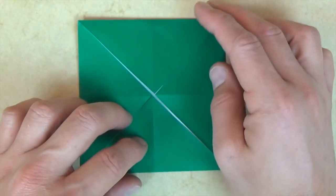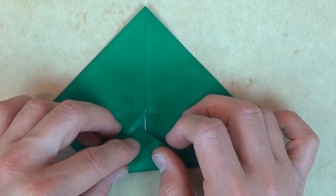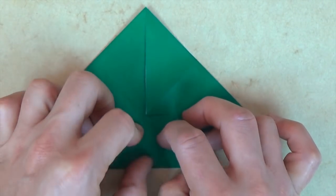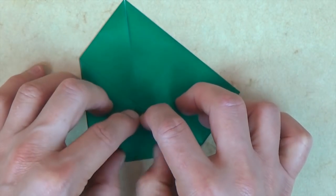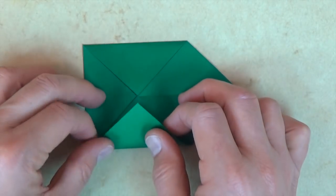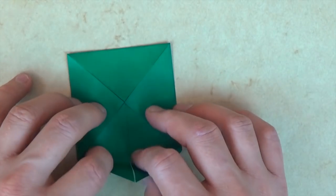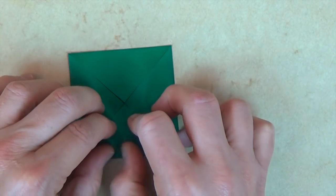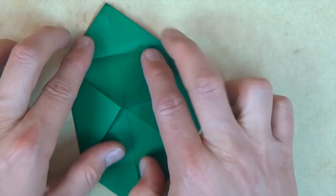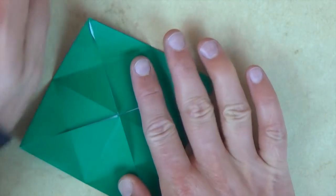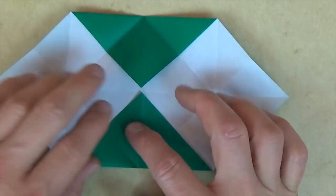And guess what? We're going to do another blintz. So rotate and fold all four corners to the middle again. Okay, now let's unfold these four corners, and let's unfold two opposite corners. Alright, so we just have these two corners folded.